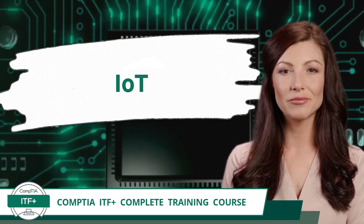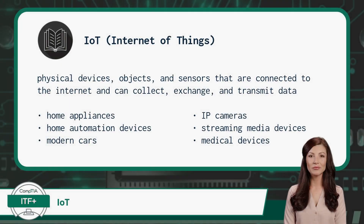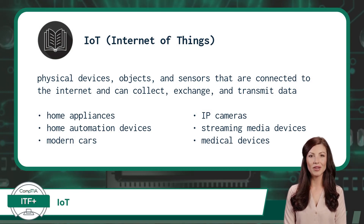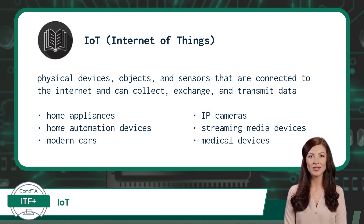IoT. We have covered the major types of computing devices in the previous video. But what about everything else that is embedded with processing and networking functionality? We have a category for them too — they are classified as IoT devices, where IoT stands for Internet of Things.